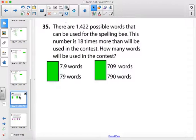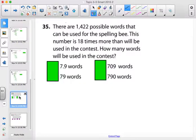And here's a word problem for you. See if you can solve that word problem. Number 35. I will pause the video. I'm going to start it up. The majority of students have answered. There are 1,422 possible words that can be used for the spelling bee. This number is 18 times more than will be used in the contest. How many words will be used in the contest?